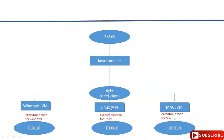If you are running this instruction on a Windows machine, it is the responsibility of the Windows JVM to convert this bytecode into machine-understandable language. Similarly, if you are running on Linux, it is the Linux JVM's responsibility, and if you run it on Mac, it is the Mac JVM's responsibility. This is how Java achieves platform independence. If you observe closely, there is a separate JVM for every platform — Windows has its own JVM, Linux has its own JVM, and Mac has its own JVM. This means the JVMs are platform dependent, but not the Java language itself.